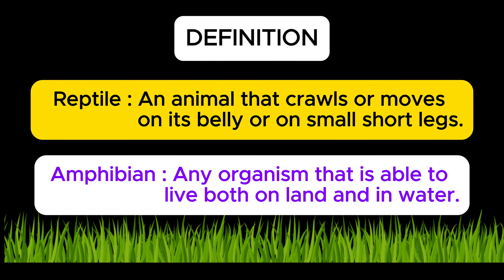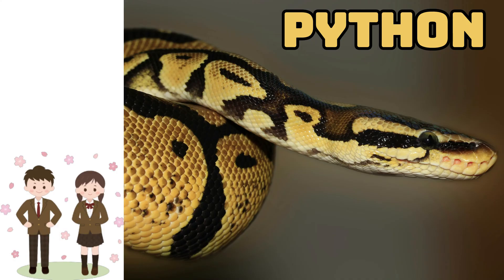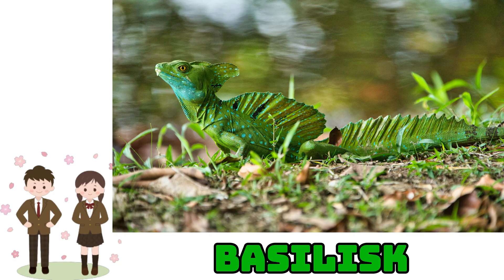Let's start with definitions. Reptile: an animal that crawls or moves on its belly or on small short legs. Amphibian: any organism that is able to live both on land and in water. This is a python. This is a basilisk.